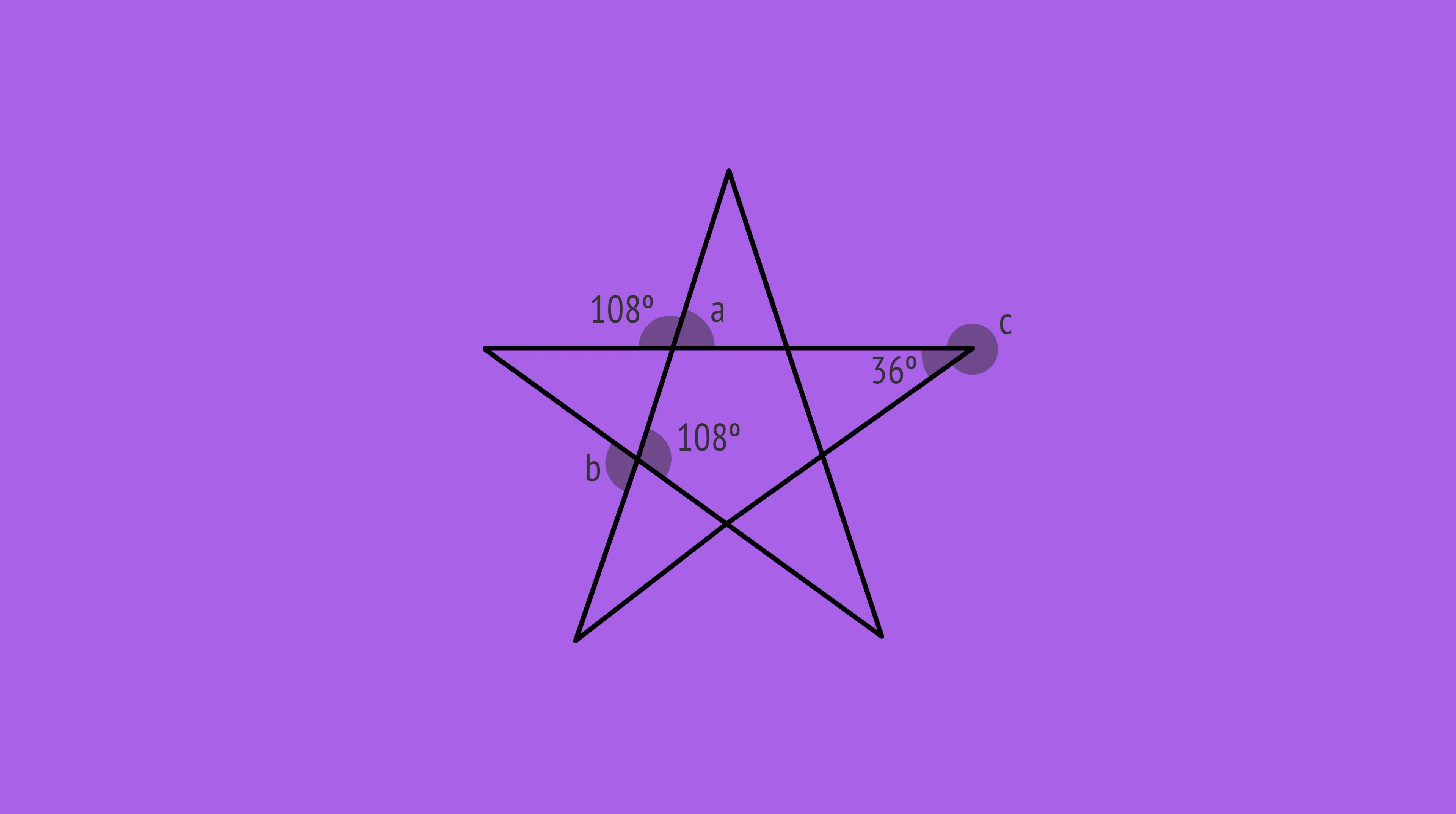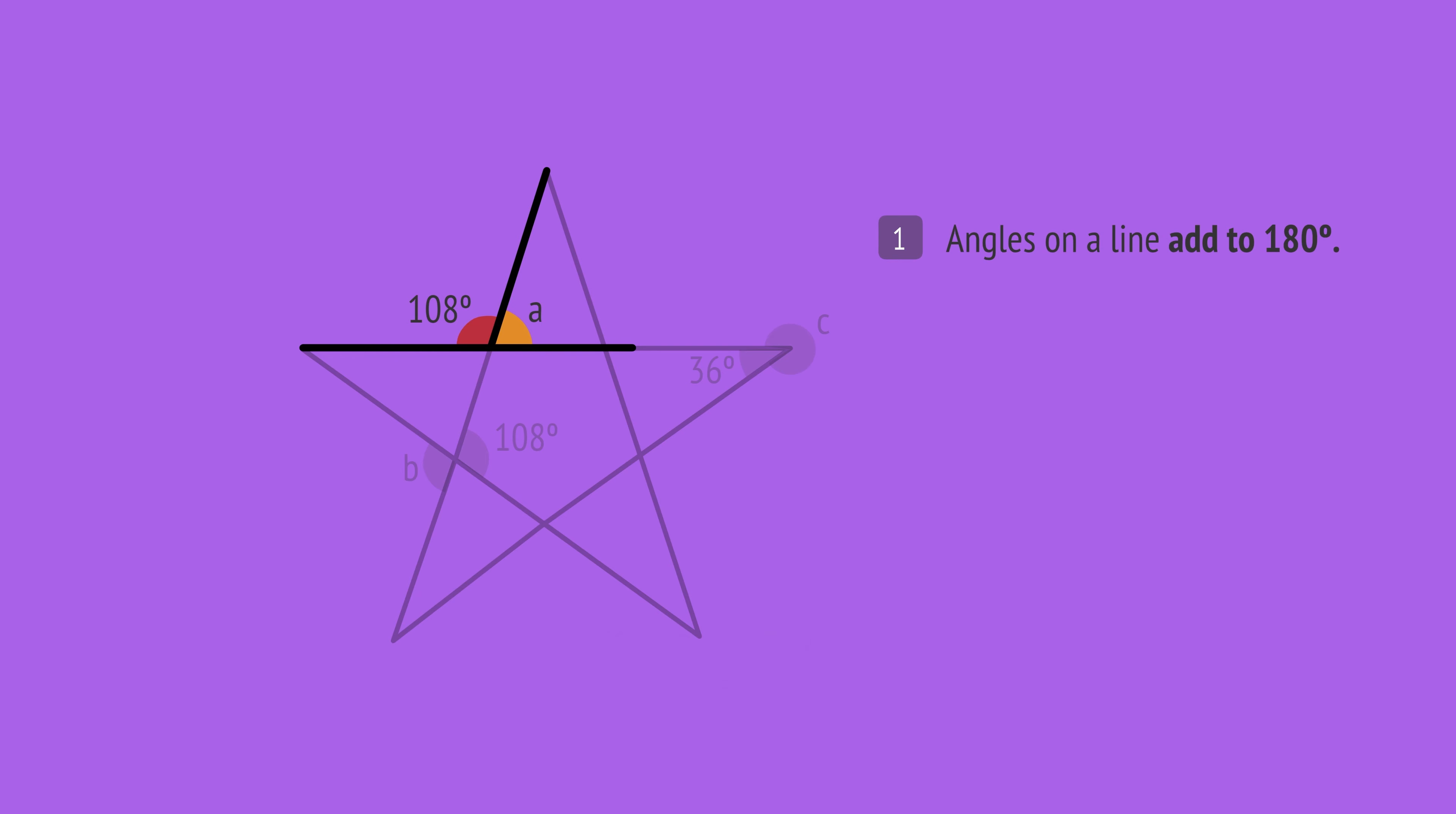So, let's apply these relationships to find angles A, B and C in this diagram. Angle A forms a straight line with this angle. Since the angles on a straight line add to 180 degrees, angle A equals 180 minus 108, or 72 degrees.